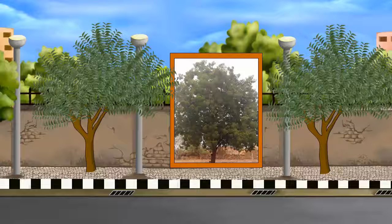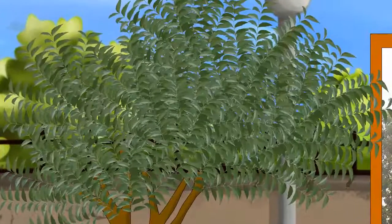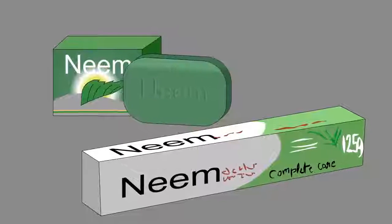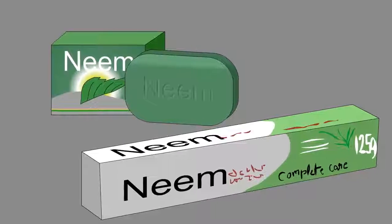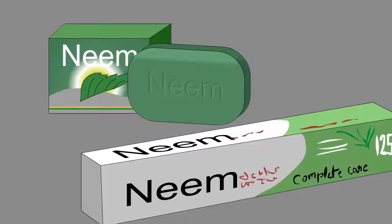Neem is one of the most common trees seen in the neighborhood. Its leaves are used as a fungicide and a blood purifier. Its leaves and bark are used to make soap, toothpaste, etc.